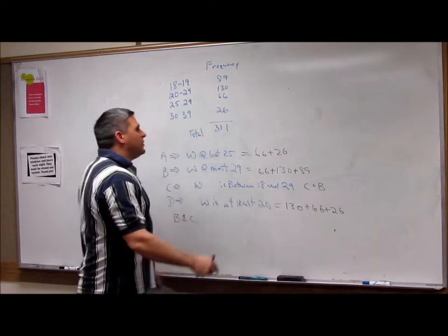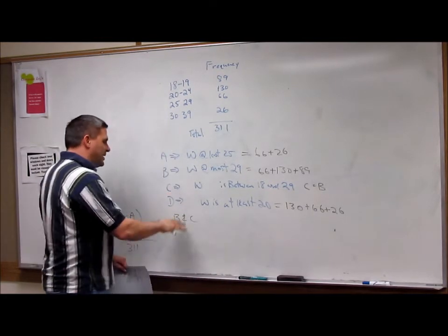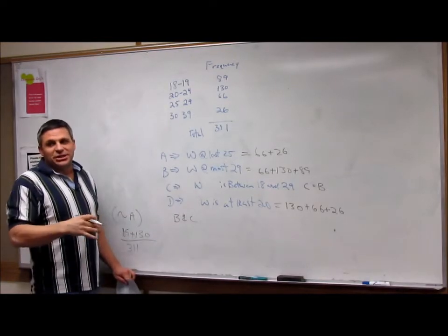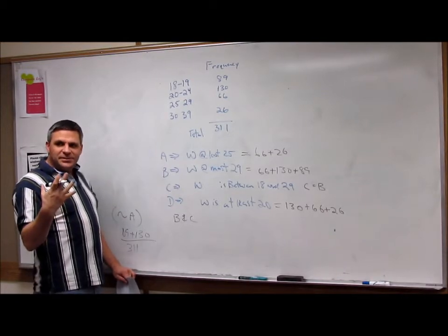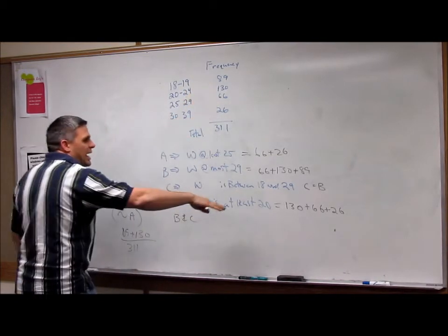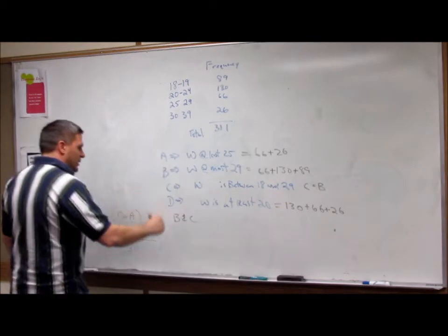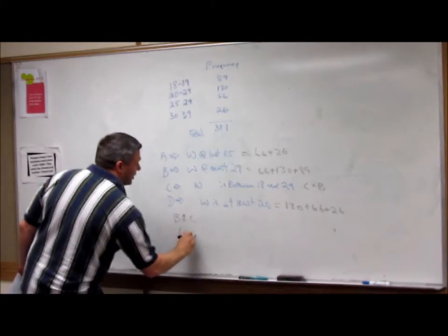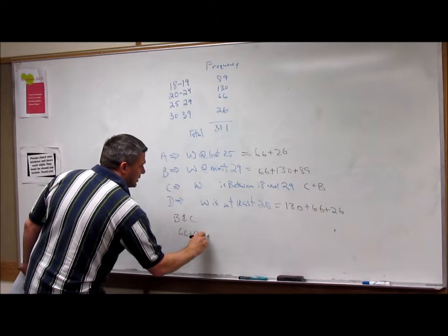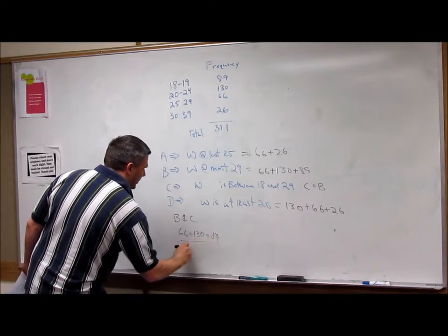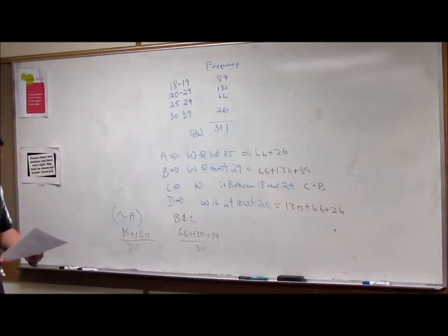So basically, B and C would be the same as if I did just B or just C. It'd have the same frequency. It'd be 26. So I'm still going to add up those numbers and get 66 plus 130 plus 89 over 311.